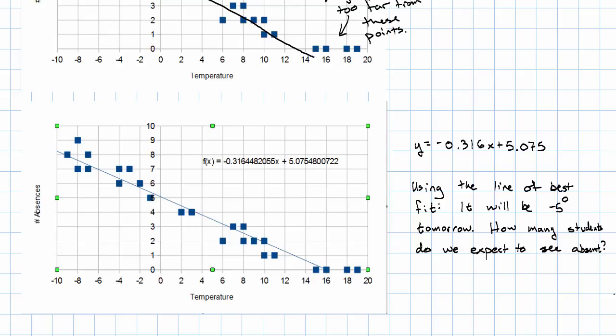If we've just drawn the line freehand, well, here's 5 degrees below 0. Here is the point on the line corresponding to 5 degrees below 0. And that has a y-coordinate between 6 and 7. From the graph, we expect 6 or 7 students to be absent.